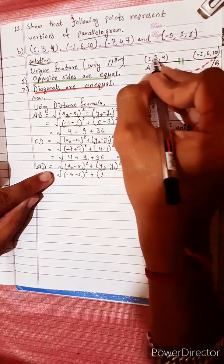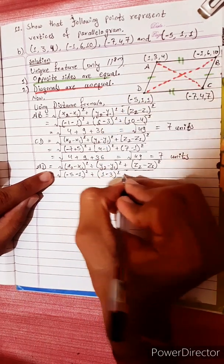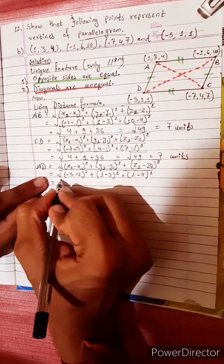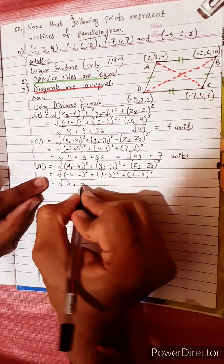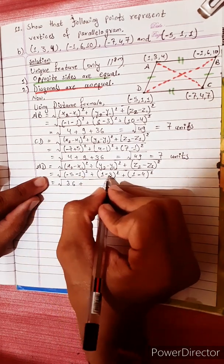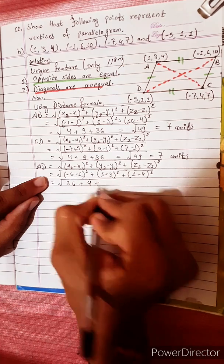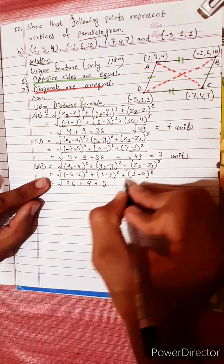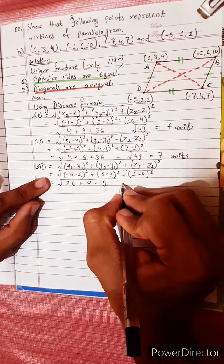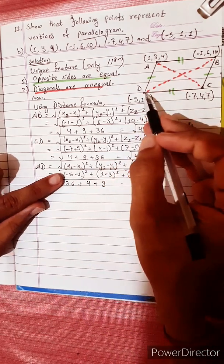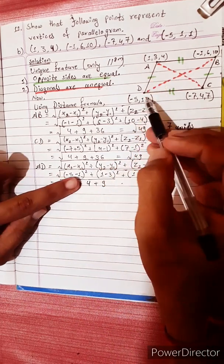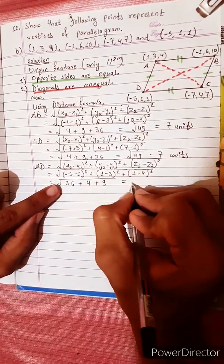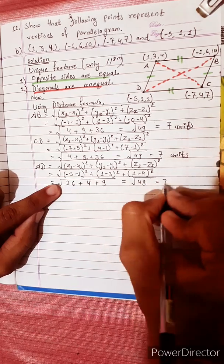Continuing CD: (-5 - (-7)) gives 2; squared is 4. (1 - 4) is -3, squared is 9. (1 - 7) is -6, squared is 36. So 36 plus 4 is 40, plus 9 is 49. Square root of 49 equals 7 units. So CD = 7 units.